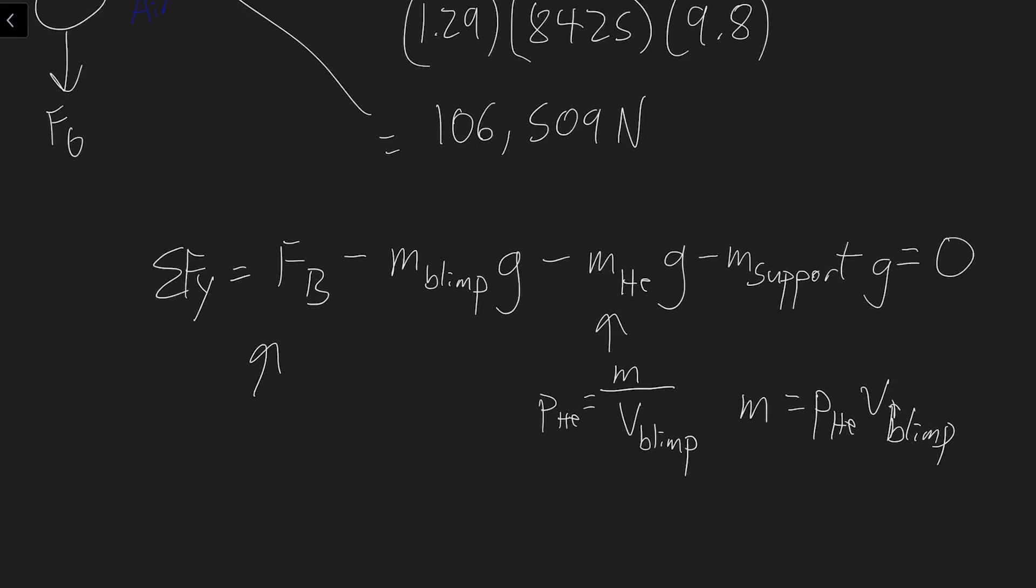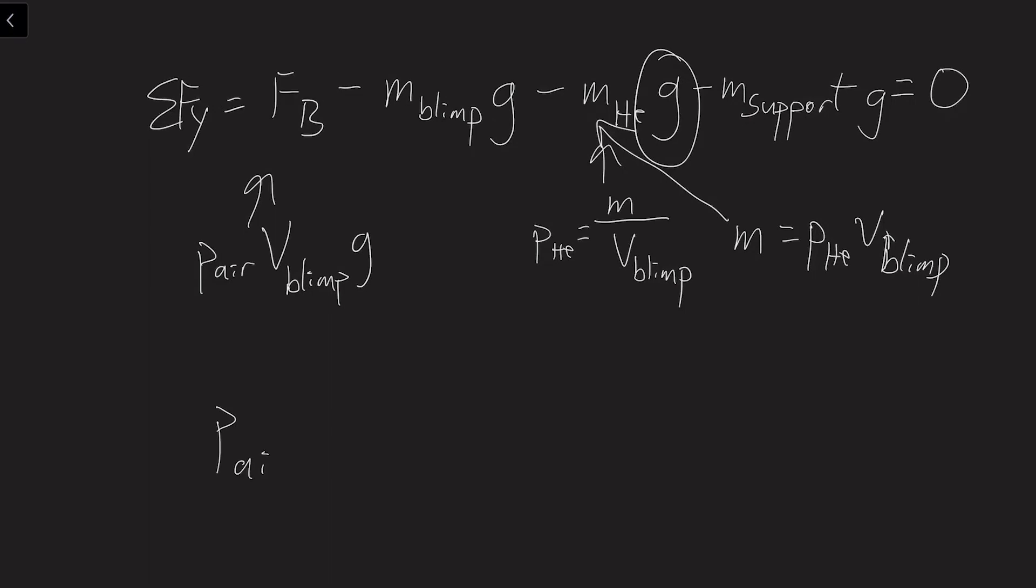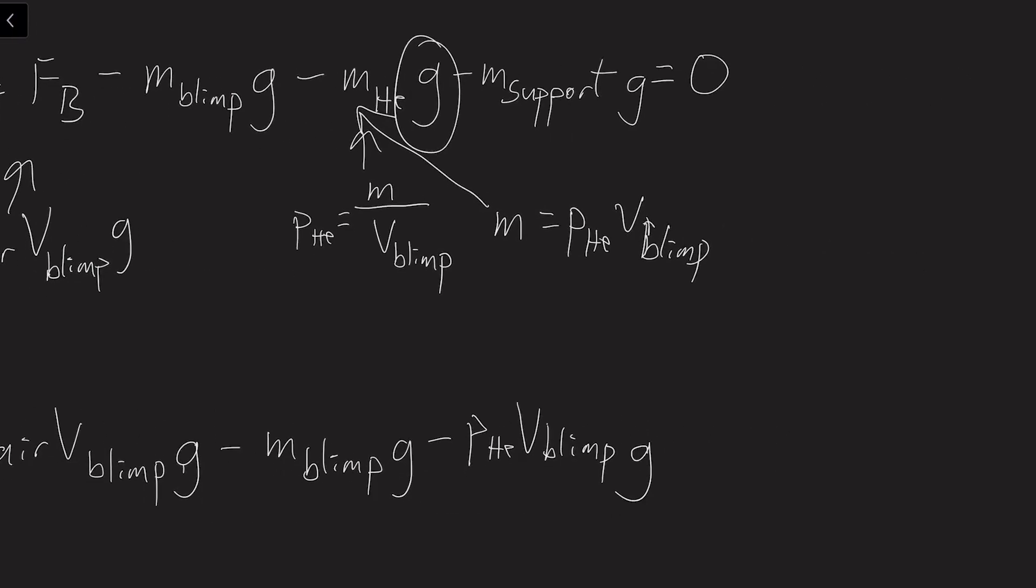Also, for the buoyant force, that would be the density of air times the volume of the blimp times gravity. And you have to remember to keep the gravity here when you plug in for M. So down here, we have density of air, volume of the blimp times gravity, minus the mass of the blimp times gravity. And this is where we sub in for mass, so we have the density of helium this time, the volume of the blimp still, and we have gravity. Then we're solving for the mass that can support. So we can move that to the other side, add it over there. And that would be times gravity.